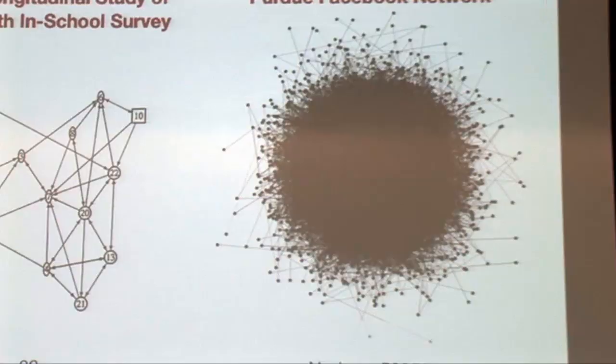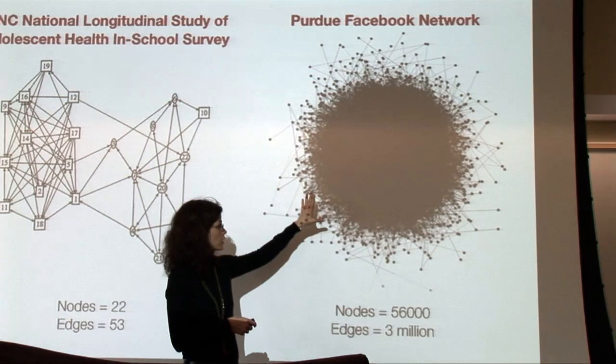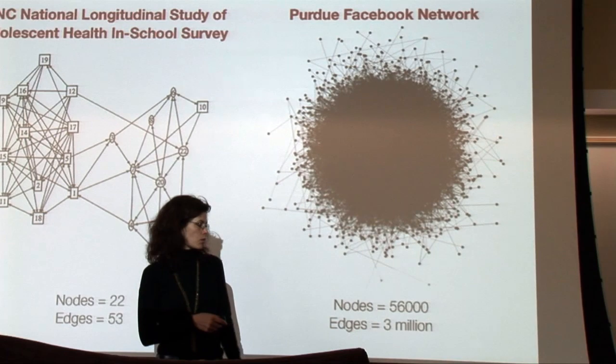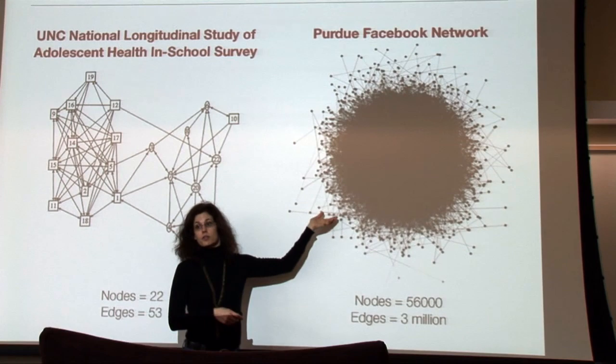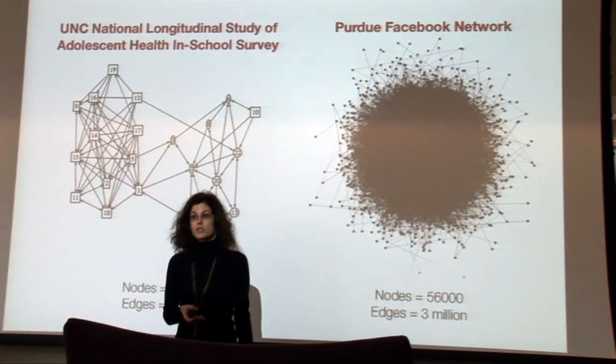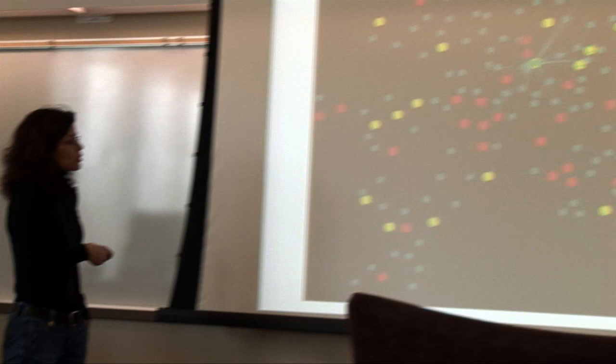Now if you look at the Purdue Facebook network instead, you get something like this. The publicly visible Purdue Facebook network in 2008 had 56,000 nodes and over 3 million edges — we can't even graph that. This is actually a subset for the class of 2011, which is a little smaller. But when you graph it, you see just a huge blob — you can no longer see any patterns in that data. One challenge is to develop automatic methods to analyze this kind of data, since we can no longer visually inspect it.